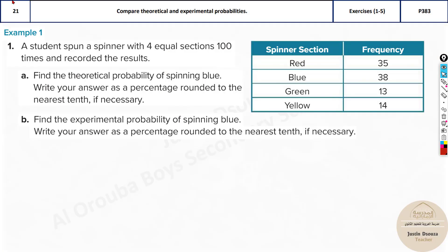Here we have a student who is spinning a spinner with four equal sections, and 100 spins are recorded. Find the theoretical probability of spinning blue, and write your answer as a percentage rounded to the nearest tenth if necessary. Then find the experimental probability of spinning blue, also as a percentage rounded to the nearest tenth.